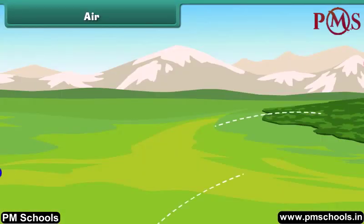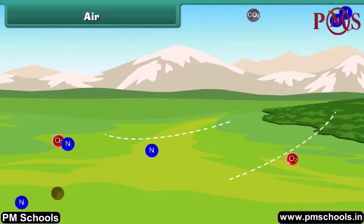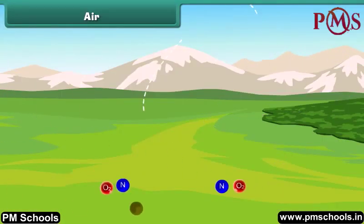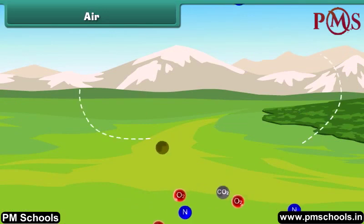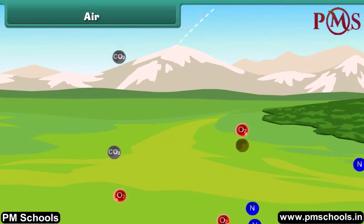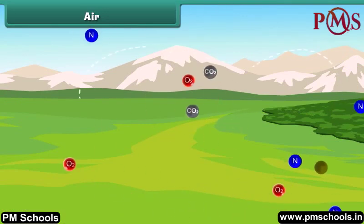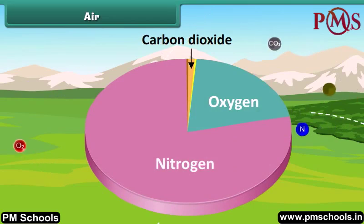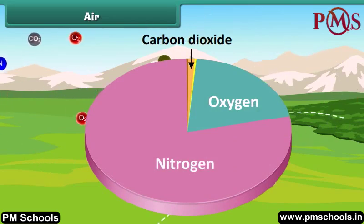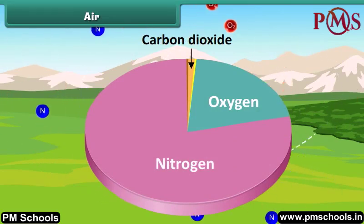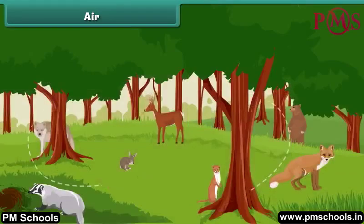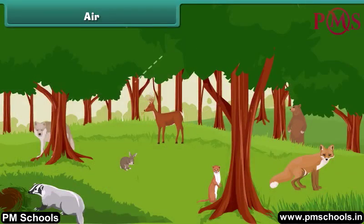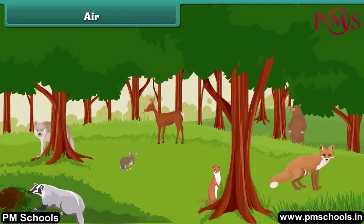Air is another important natural resource. Air is a mixture of gases. It consists mainly of nitrogen, oxygen and carbon dioxide. Oxygen is essential for the survival of all living things.